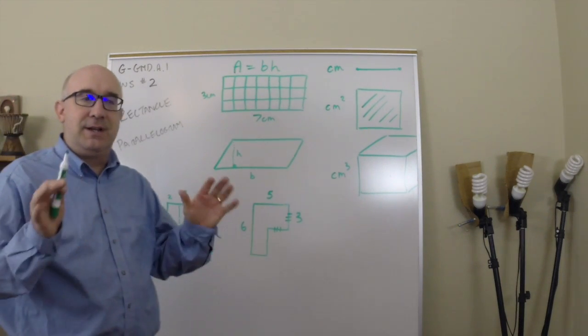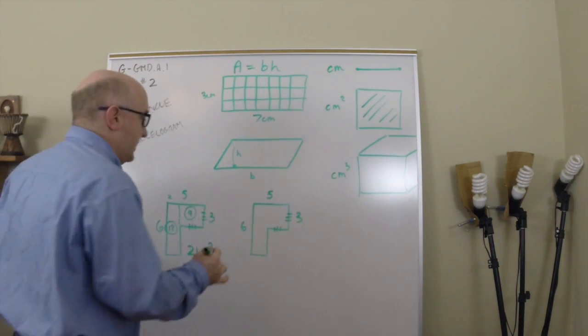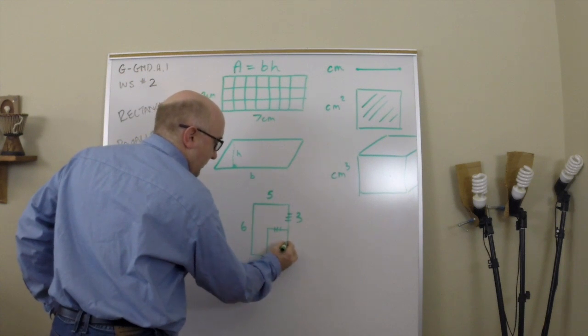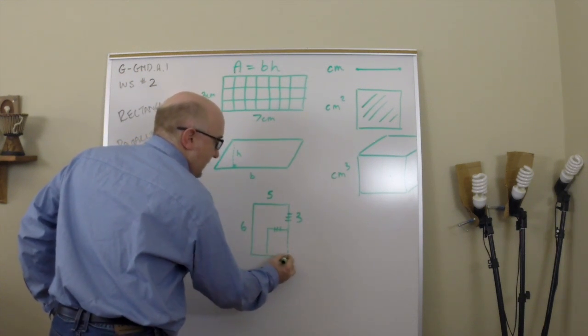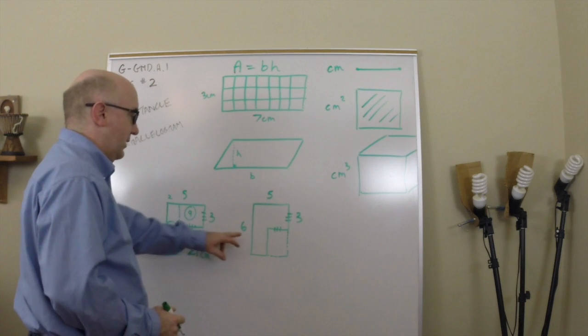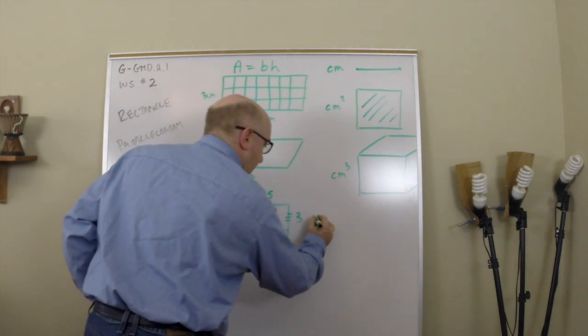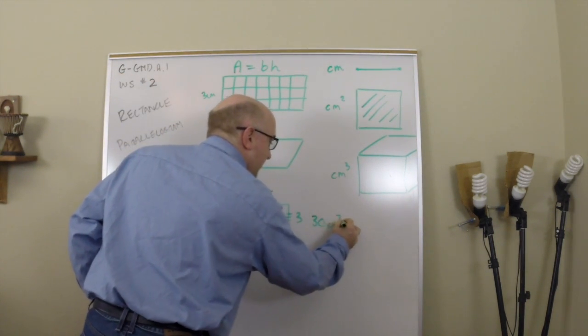Now a different student looking things in terms of the whole might say, oh, that's one big rectangle. So they look at it as one solid area of six times five for thirty.